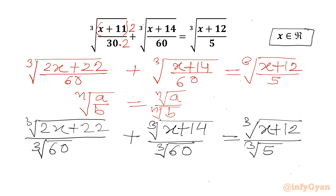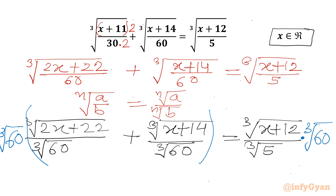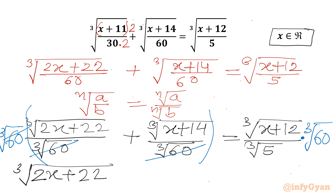Now we will multiply both sides by cube root of 60. I will multiply the LHS with cube root of 60 and the RHS also with cube root of 60. So the cube root of 60 denominators from the LHS will be cancelled out. So I can write our equation as cube root of (2x plus 22) plus cube root of (x plus 14).